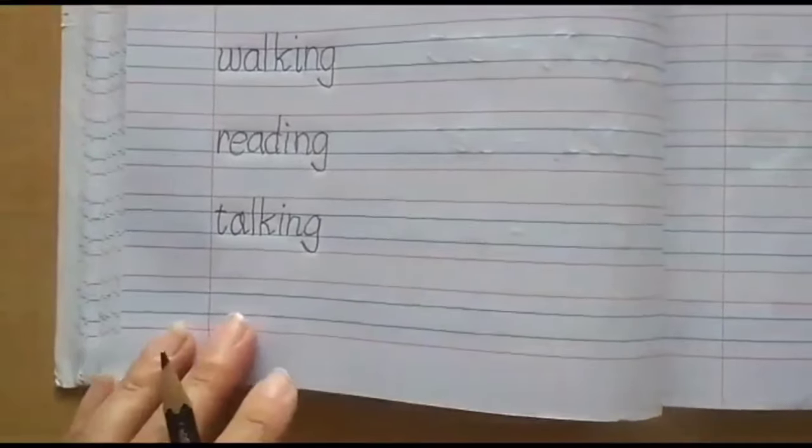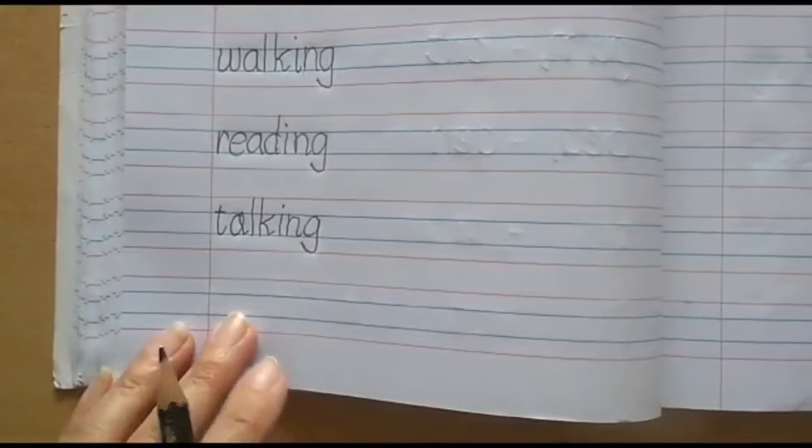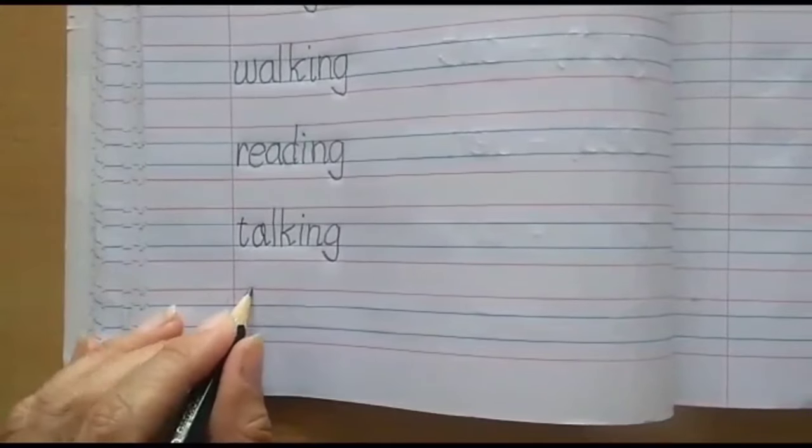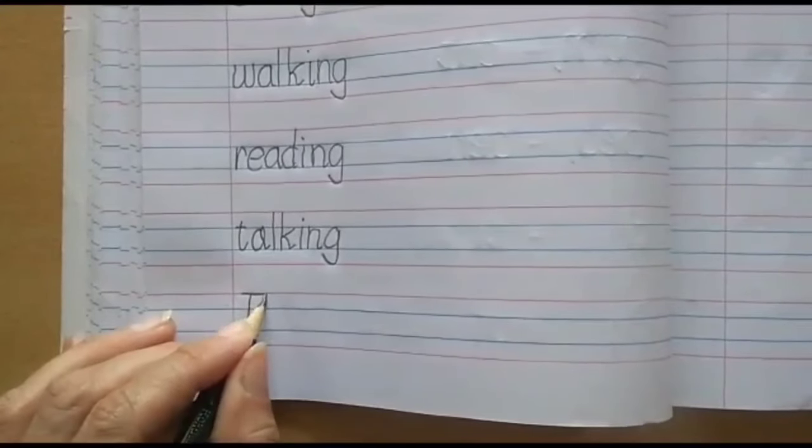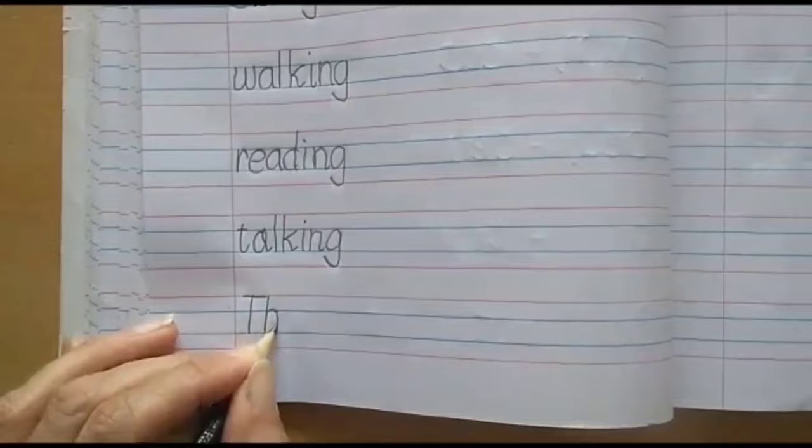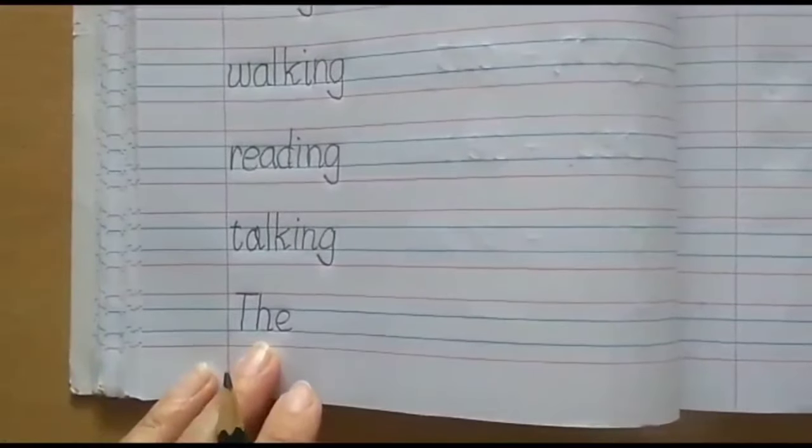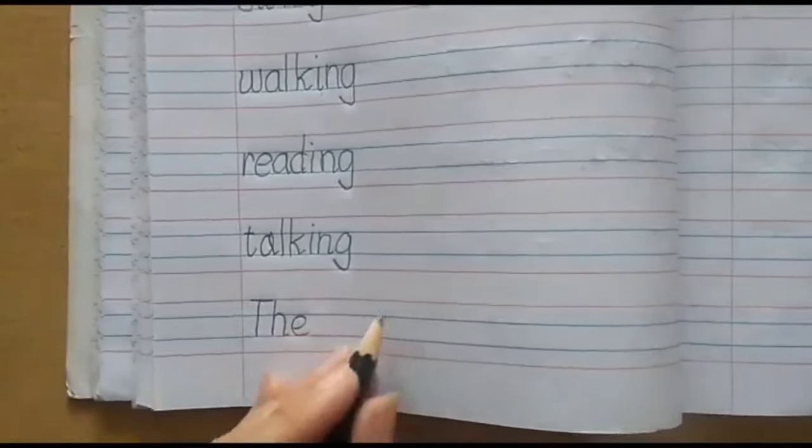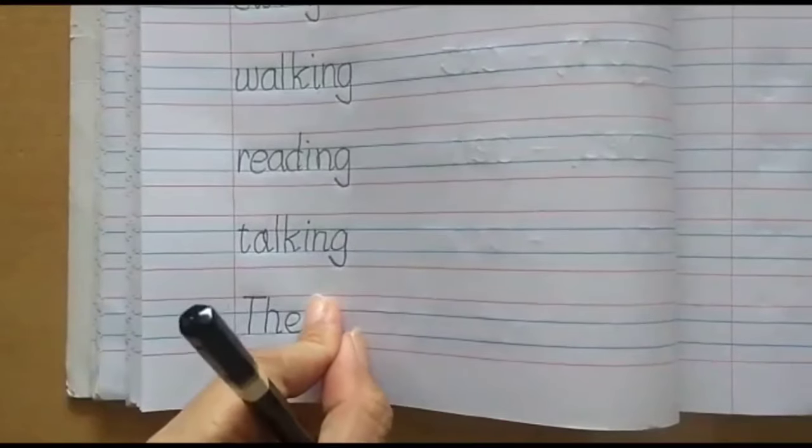After that we will write a sentence. Children, I hope you all remember when we write a sentence we begin with a capital letter. So let's begin. Children, please read the. After writing the, what we need to do? We need to keep our index finger before we write the second word. Let's do it. I have kept it so from here I will start. Right?